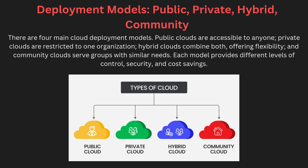A hybrid cloud combines both public and private cloud, offering flexibility for businesses to keep sensitive data in a private environment while taking advantage of the scalability of the public cloud. Finally, the community cloud serves a group of organizations with similar requirements, such as government agencies, allowing them to share resources securely. Each model addresses different needs, from cost saving to data control and security.